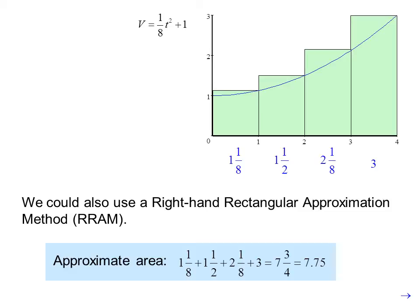Now, looking at this picture, we see that our estimate is too high because we have these extra areas here, here, here, and here.